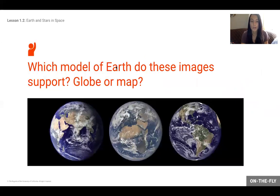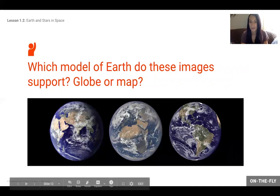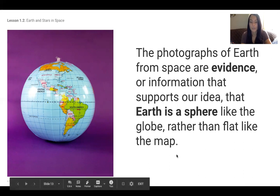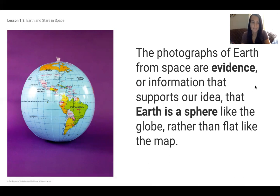Which model of Earth do these images support? A globe or map? This is a pretty easy question, you should know that this is a globe. The photographs of Earth from space are evidence that supports our idea that Earth is a sphere like a globe rather than flat like a map. It is round, we know that our Earth is a sphere.